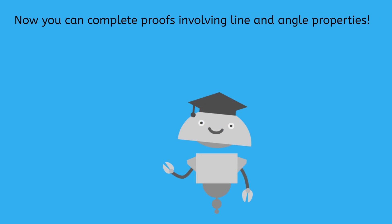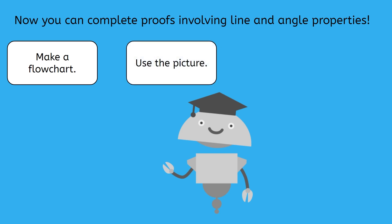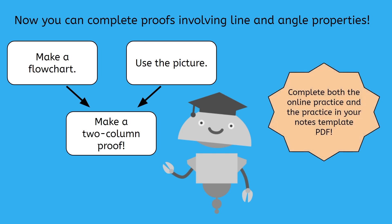Now you know how to complete proofs involving line and angle properties. To help you be successful, use a flowchart to help you organize your thoughts and use the picture to help you identify relationships. Then you can use your prep work to help you make a two-column proof. Your practice for this lesson will have both an online multiple-choice component and work in your notes template PDF. Make sure you complete all parts of the practice to help you master this skill. See you next time!